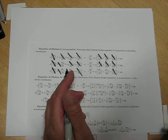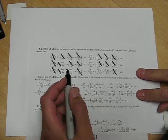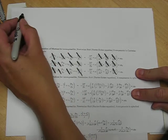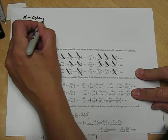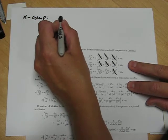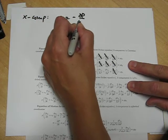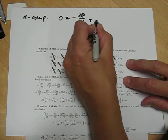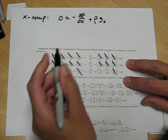And we can now collect those terms and find out that for this first component, the x component, we get that zero equals minus dp dx plus rho gx. So we'll have to figure out the rho gx in a minute.